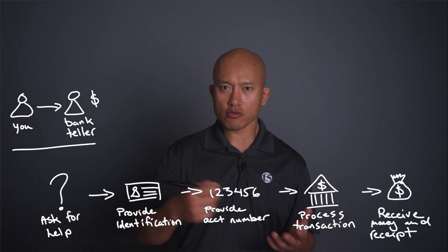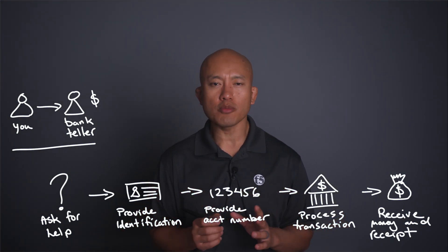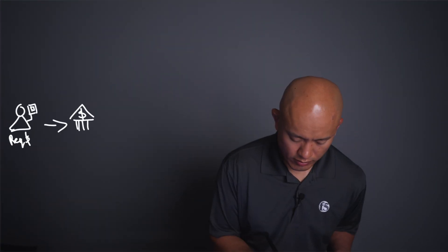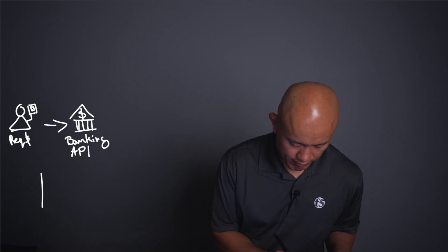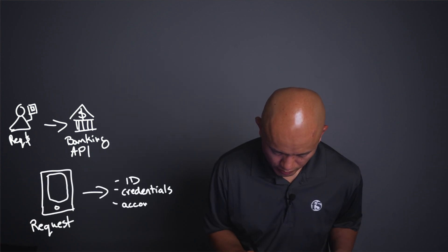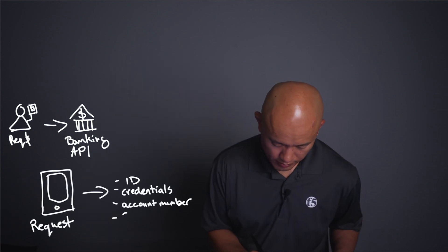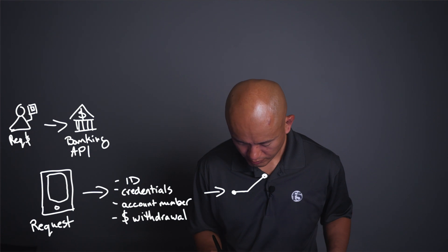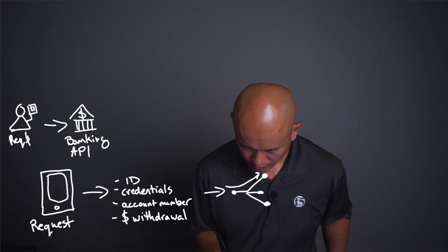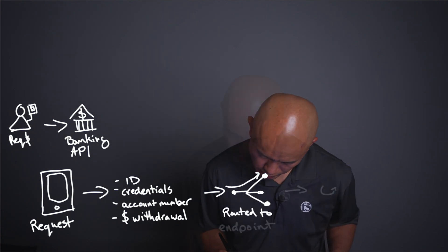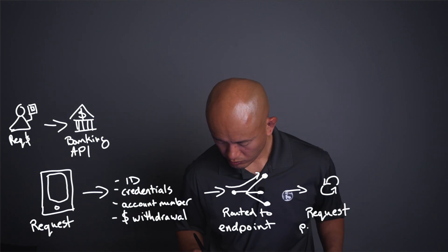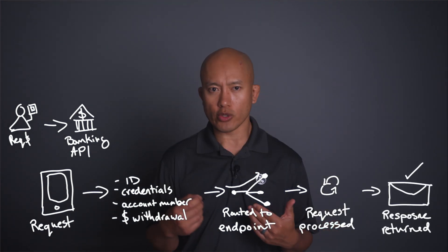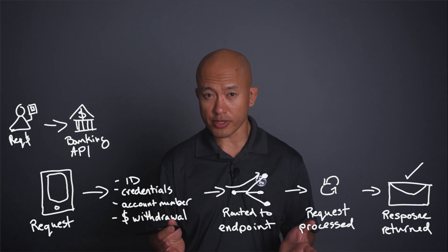For an API request and response, it's actually very similar to that transaction. So let's keep on this bank scenario. The client in this case is actually a mobile application, or it could be a web page. It sends a withdrawal request to the banking API. The request will include a form of ID, credentials, and information letting the API know what you'd like to do. The request is then routed to the appropriate part of the application, which processes withdrawals. The request is processed and the API returns a response, indicating whether or not that transaction went well or if there was an issue.